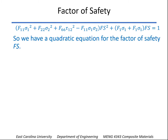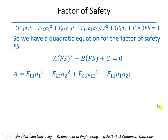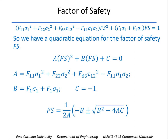Of course, what this is, is a quadratic equation for the factor of safety. A quadratic equation can be written in the form A times the variable squared plus B times the variable plus C equals zero. A will be the terms multiplied by the factor of safety squared, B will be these terms, and the constant C — bringing one back over to the other side of the equal sign — is equal to negative one.